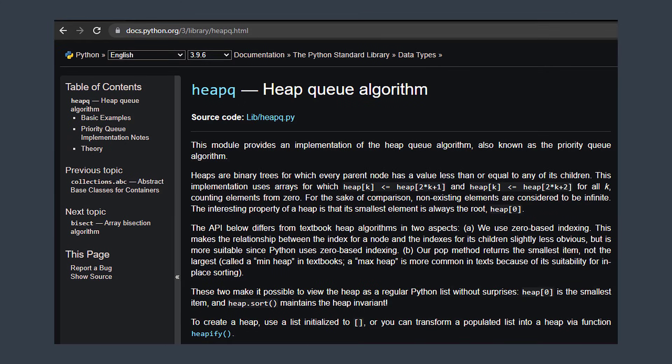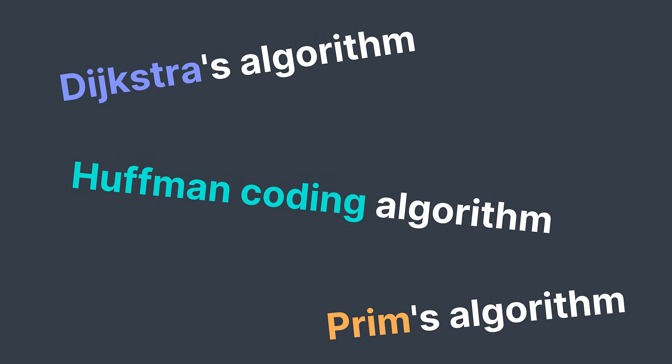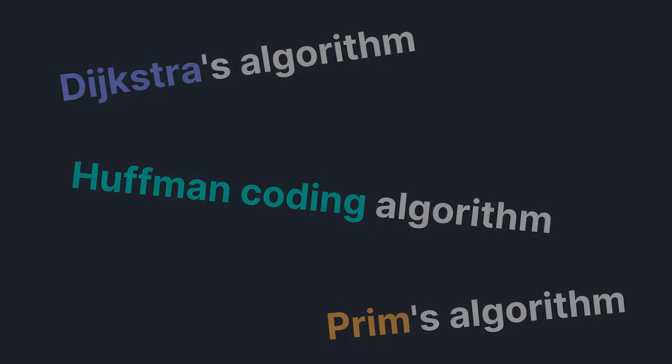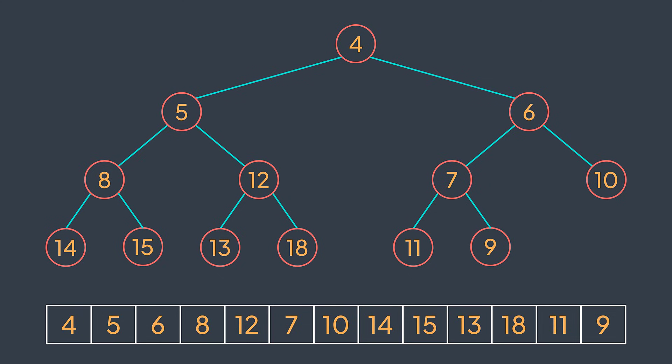Also note that there may exist a library for priority queues in your language to avoid reinventing the wheel — for example, in Python there is heapq. The priority queue has many applications: we can use it in Dijkstra's algorithm, Huffman coding algorithm, Prim's algorithm, and many other ones — we will see them in future videos. We've reached the end of this video. In this one we discovered the heap data structure, its advantages, its implementation, and some of its applications. I hope you understood all of this. Please subscribe and share this video, and see you in the next one.